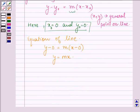And thus, the equation of a line passing through the point 0, 0 with slope m is given by y is equal to mx.